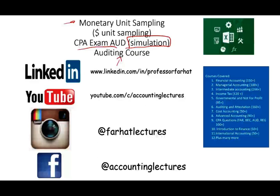Monetary unit sampling is also known as dollar unit sampling. It means you're using the dollar as a unit rather than the account as a unit, so the sampling is based on the dollar. This means the higher the dollar amount in the population, the higher the probability of that amount getting selected. This is a common statistical method for tests of details.